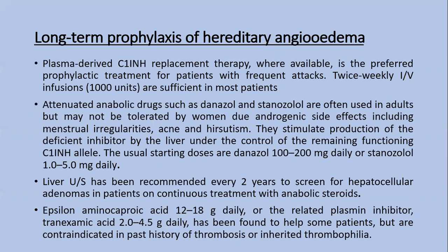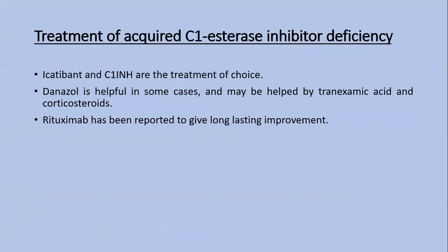Treatment of acquired C1 esterase inhibitor deficiency: icatibant and C1 inhibitor are the treatment of choice; danazol is helpful in some cases and benefit may also come from tranexamic acid and corticosteroids. Rituximab has been reported to give long-lasting improvement. Thank you for your patient listening.